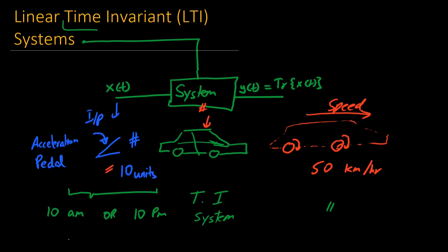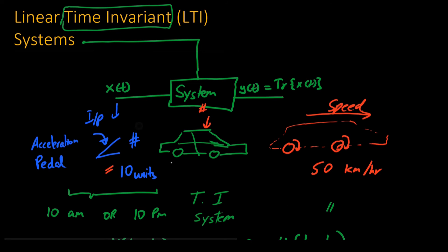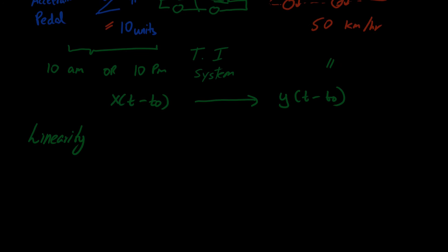That is a system which is independent of time shift. If we have an x(t - t₀), the output would translate to y(t - t₀). So that is, it is a time invariant system. Next let us discuss what is linearity. For a system to be linear it must satisfy two properties.